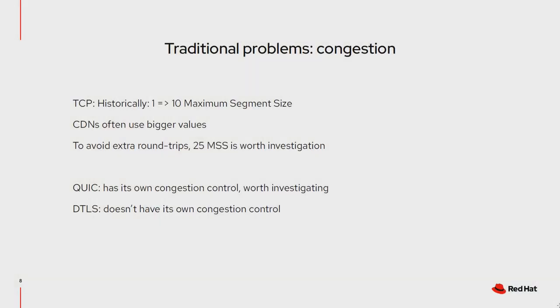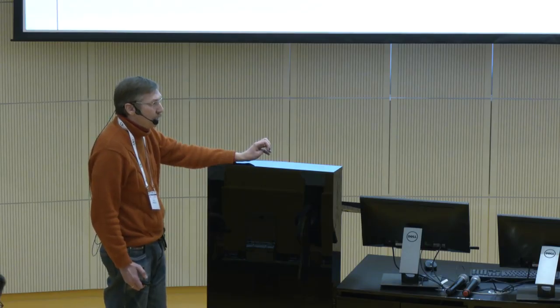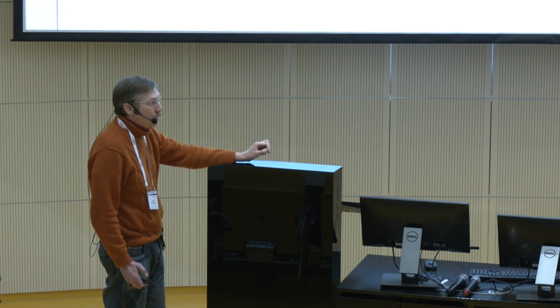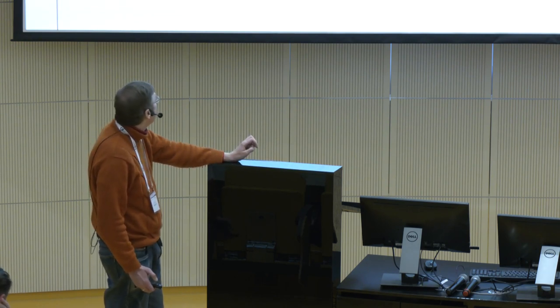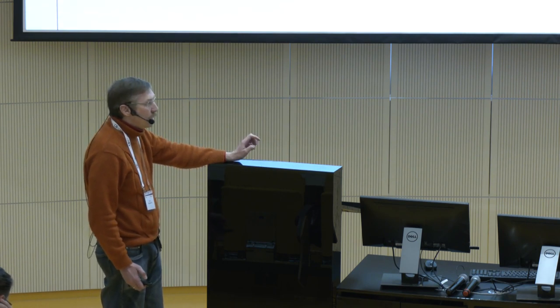The next problem traditional to networks is congestion. So, the evolution of congestion window is that it started from 1 to 10 maximum segment size, and now CDNs often provide bigger segment size, bigger congestion window, but again, for post-quantum certificates, and especially for certificates chains, it will not be enough, and it also will cause slowdown. It can be partially resolved by, for example, caching intermediate certificates, but we can't say it's universal solution. Also, DTLS does not care about congestion.